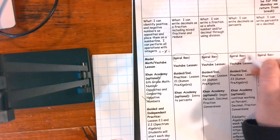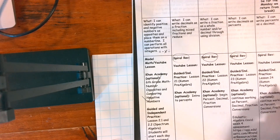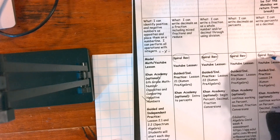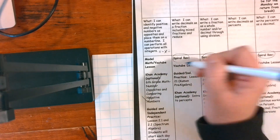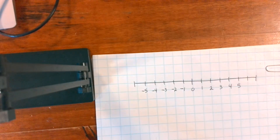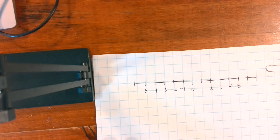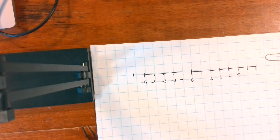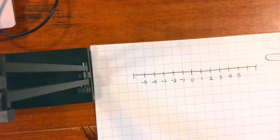We're going to use this to start every one of our days. If you notice, the start of every day is a spiral review. I did put a Friday in here — that's actually what we'll do the day we get back, so you can work ahead if you want or save it for that Monday. Here we go: positive and negative numbers. These are like guided notes, so if you want to write these down on a piece of paper, that would be great.